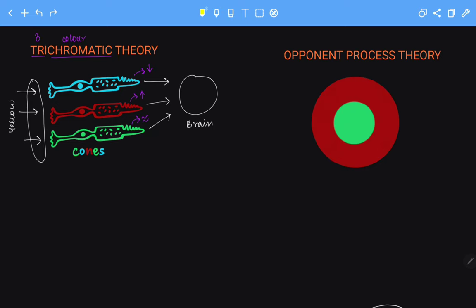So the brain over here is going to add up these stimulations by the blue, red and green cone. Upon adding these stimulations, it perceives that the color that we are seeing is yellow.